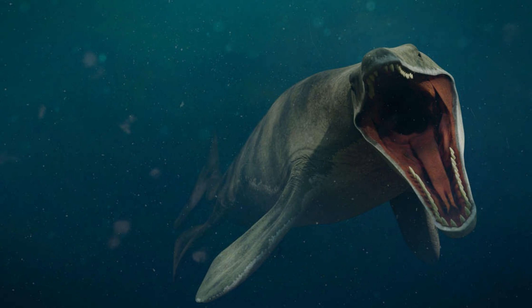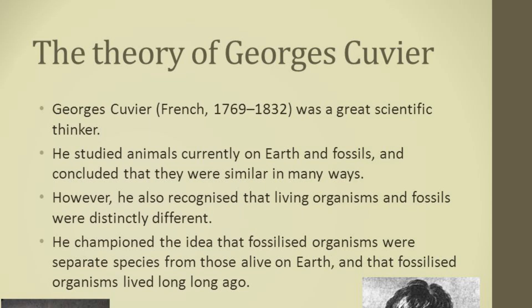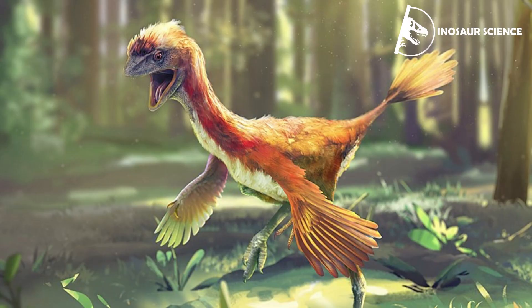Cuvier is also remembered for strongly opposing theories of evolution, which at the time — before Darwin's theory — were mainly proposed by Jean-Baptiste de Lamarck and Geoffroy Saint-Hilaire. Cuvier believed there was no evidence for evolution, but rather evidence for cyclical creations and destructions of life forms by global extinction events such as deluges. In 1830, Cuvier and Geoffroy engaged in a famous debate said to exemplify the two major divisions in biological thinking at the time — whether animal structure was due to function or evolutionary morphology. Cuvier supported function and rejected Lamarck's thinking.